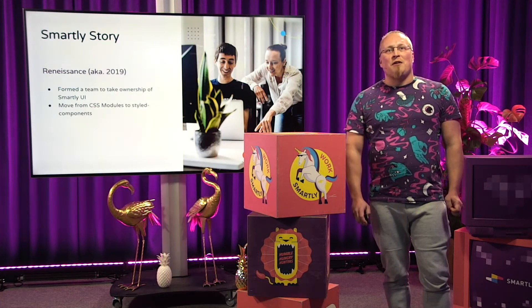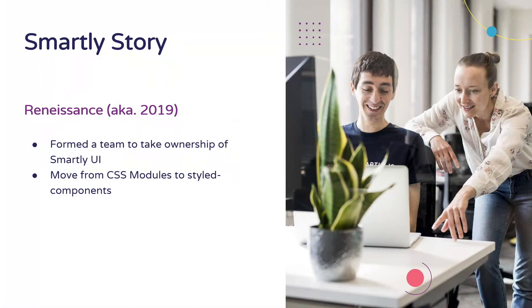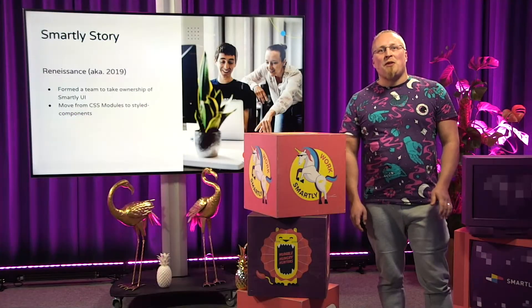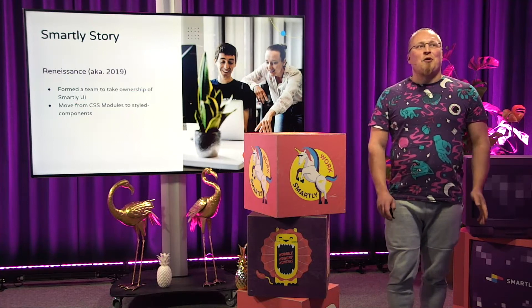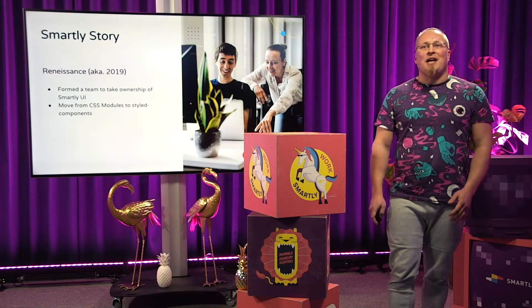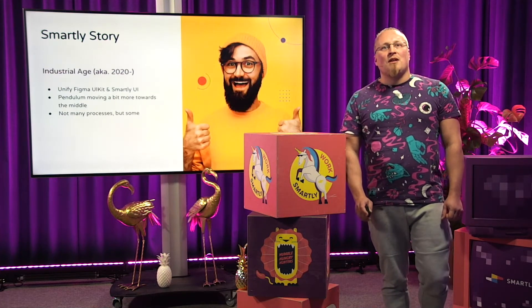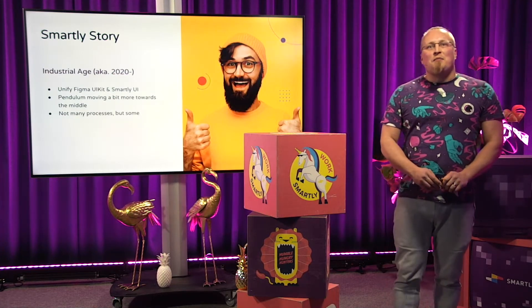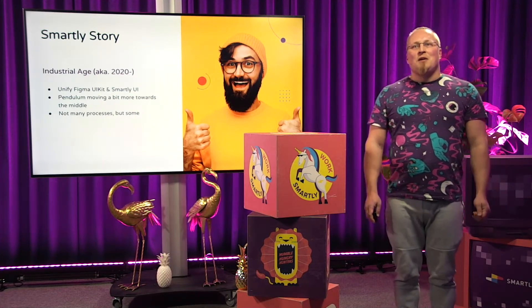In 2019, we finally formed a team to take ownership of Smartly UI. In addition to developing the toolkit further, the team also acted as a gatekeeper for feature requests and changes. This of course introduced more processes to the system and moved us away from flexible toward a more rigid system. But remember, this is not necessarily a bad thing — there is no better or worse between flexible and rigid. Even though we had processes in place like gatekeeping pull requests, we still wanted to keep those processes out of the way as much as possible.